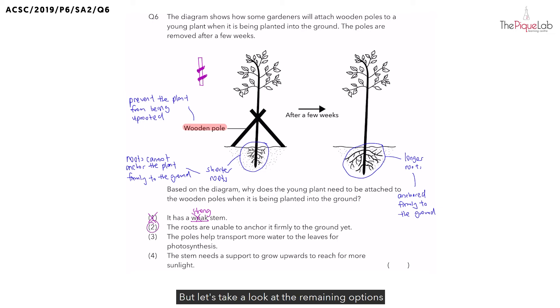But let's take a look at the remaining options just to be sure. Let's look at option three. The poles help to transport more water to the leaves for photosynthesis. Is that true? Do the wooden poles help to transport water? No. In fact, which part of the plant helps to transport water? It is actually the water-carrying tubes that are found in the stem. So, immediately, option three is false.